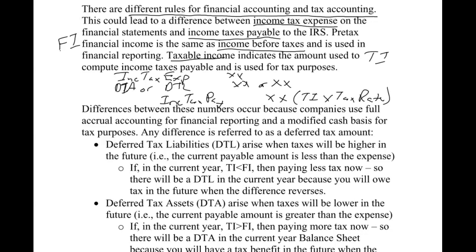The deferred tax asset and deferred tax liability arise because there's a difference between what we pay to the IRS and what we record on our financial statements. We use full accrual accounting — generally accepted accounting principles — for financial accounting, while tax is basically a modified cash basis. So even if you haven't had your tax class yet, you're fine. We're not getting into the full tax code — just a few common differences like depreciation, warranties, and similar items, which we'll cover in future videos.